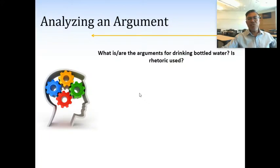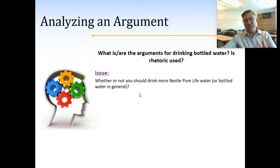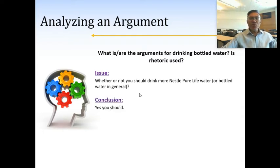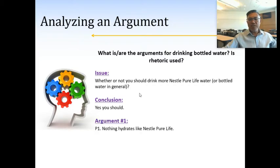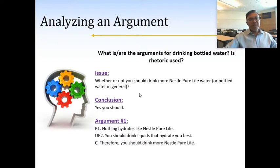So what's the issue here? Well, the issue again is whether or not we should drink more — in this case it's Nestlé Pure Life water — and obviously the conclusion the Nestlé Pure Life folks want us to draw is that you should drink more of their water. So what's the argument? It seems like there's a couple of arguments or a combination. One way to phrase an argument here would be to say 'nothing hydrates like Nestlé Pure Life,' with an unstated premise that says you should drink liquids that hydrate you best, therefore you should drink more Nestlé Pure Life. Notice that it's a syllogism — at least the way I structured it. You can rewrite this as a categorical syllogism and use our Venn diagrams or rules method to analyze the validity of the argument.